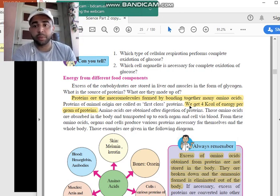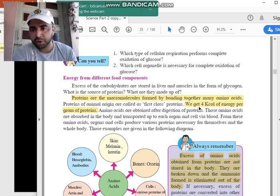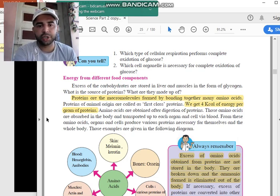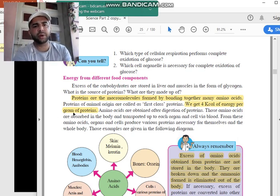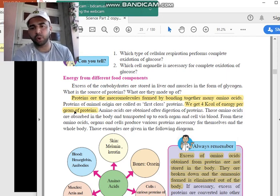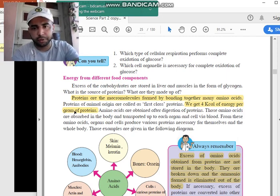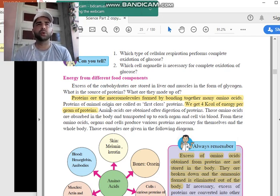We do get energy from proteins. And how much? We do get four kilocalories of energy per gram of protein. So if you consume one gram of protein, you'll be getting four kilocalories of energy from that. So let us now simplify this.